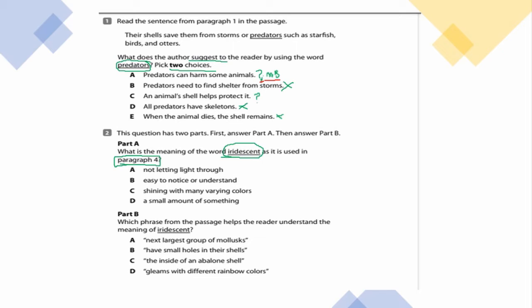D: All predators have skeletons — that's not what the sentence said. E: When the animal dies, the shell remains — the sentence didn't tell us anything about that, so that can't be my best answer. By now, I hope you have your best two answers.